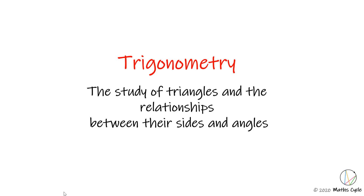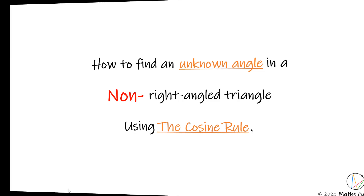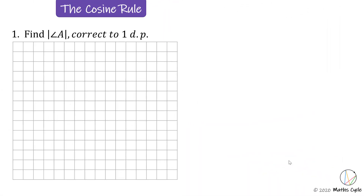Trigonometry is the study of triangles and the relationships between their sides and angles. In this video we will look at how to find an unknown angle in a non-right-angle triangle using the cosine rule.